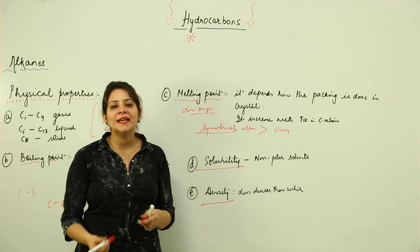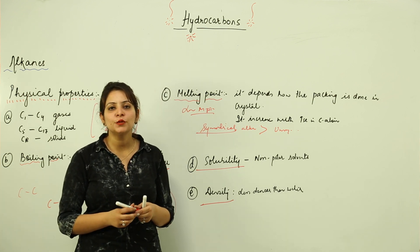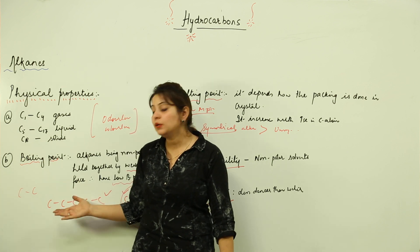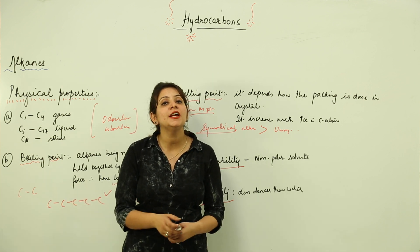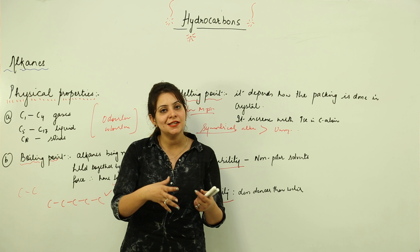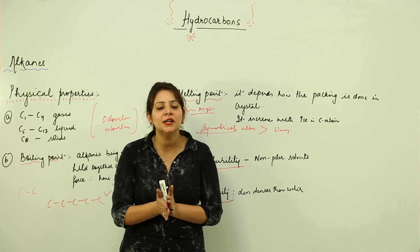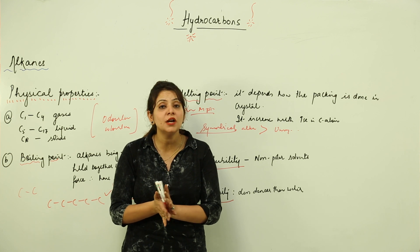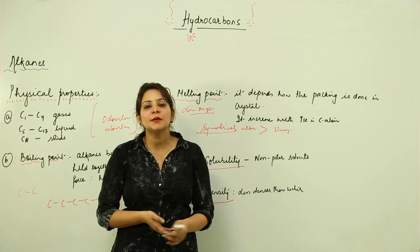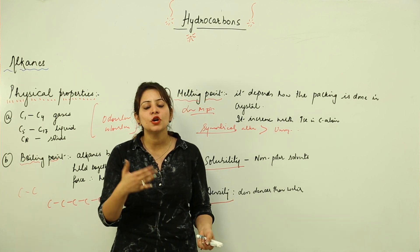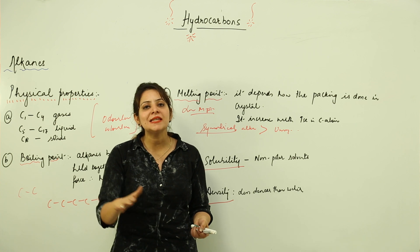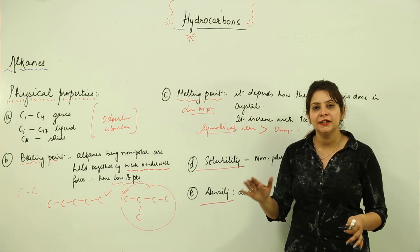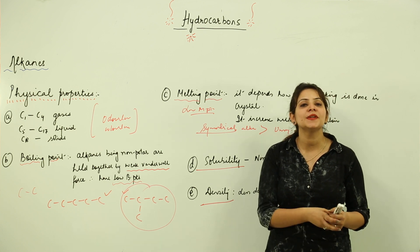Density is mass per unit volume — it reflects how closely particles are packed. Since alkanes have only weak van der Waals forces, their density is lower than that of water. Water possesses hydrogen bonding, which is much stronger, so water is denser than alkanes. These are the physical properties of alkanes; next we move to their chemical properties.